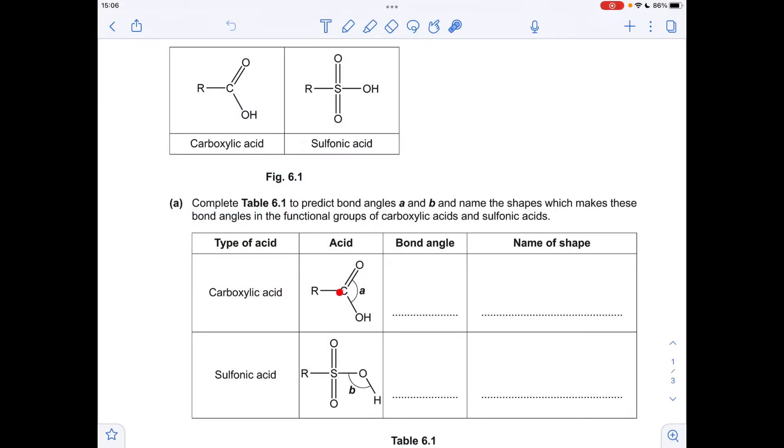The bond angle around these two atoms is dictated by the number of electron regions around the atom. So you can see we've got one, two, three electron regions. This double bond counts as one region. We've got no lone pairs, so these are all bonding regions, which means we'll get equal repulsion. The angle for three bonding regions is 120 degrees, and the name of the shape is trigonal planar.